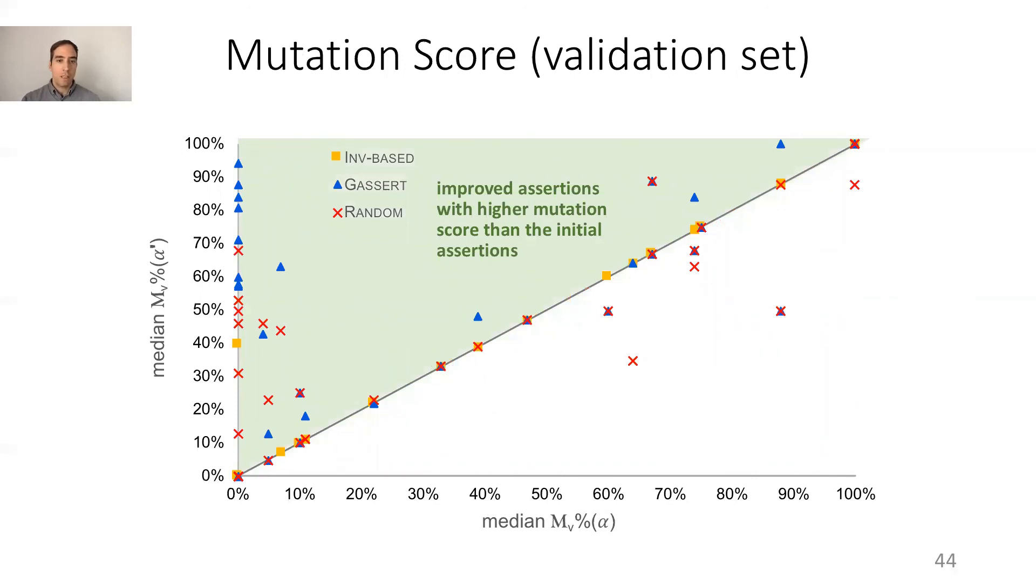This graph shows the improvement of the mutation score with respect to the validation set. In this case, above the diagonal means that the mutation score increased after the oracle improvement. Also, in this case, J-Assert performs better than both random and invariant-based oracle improvement.